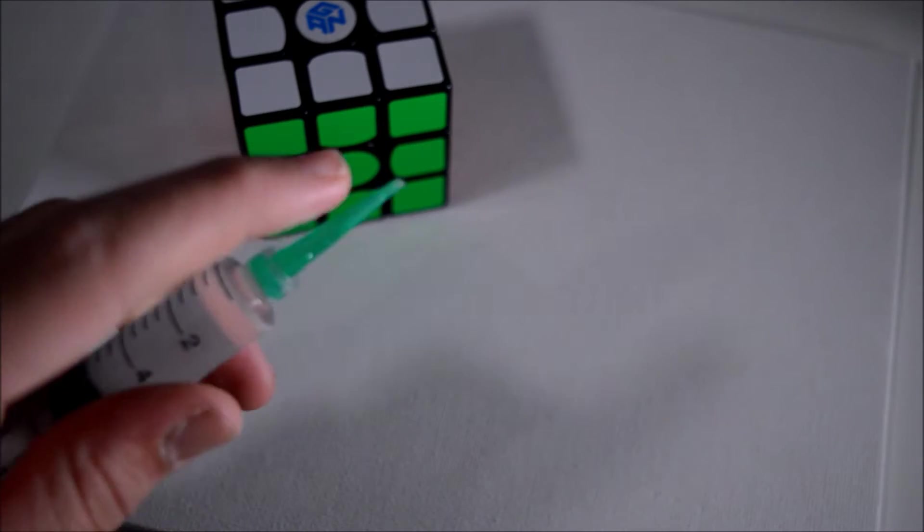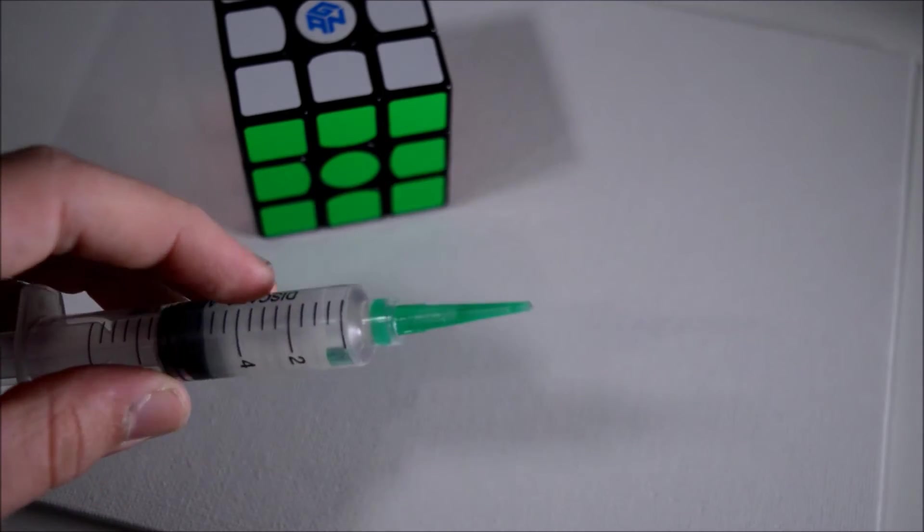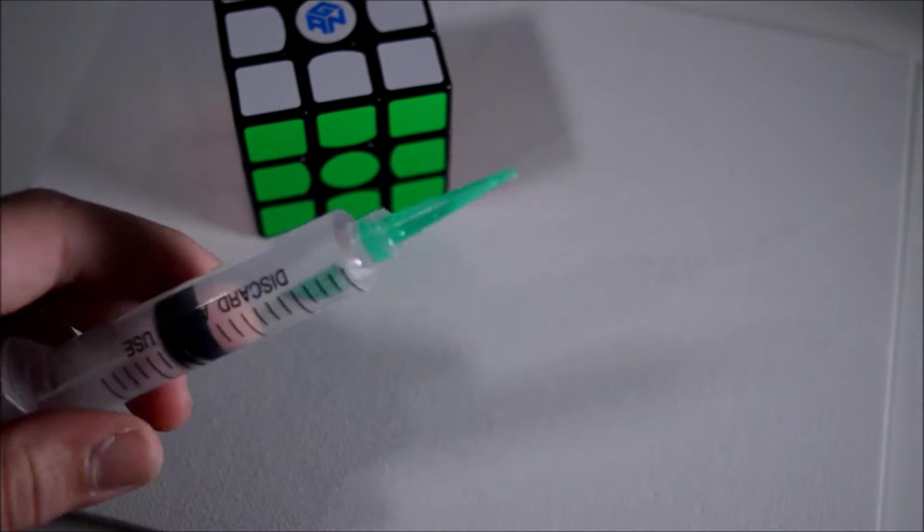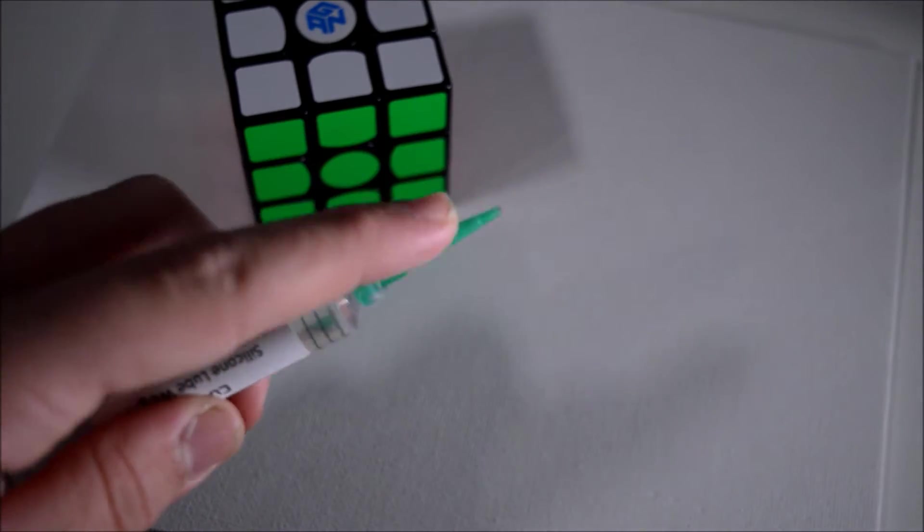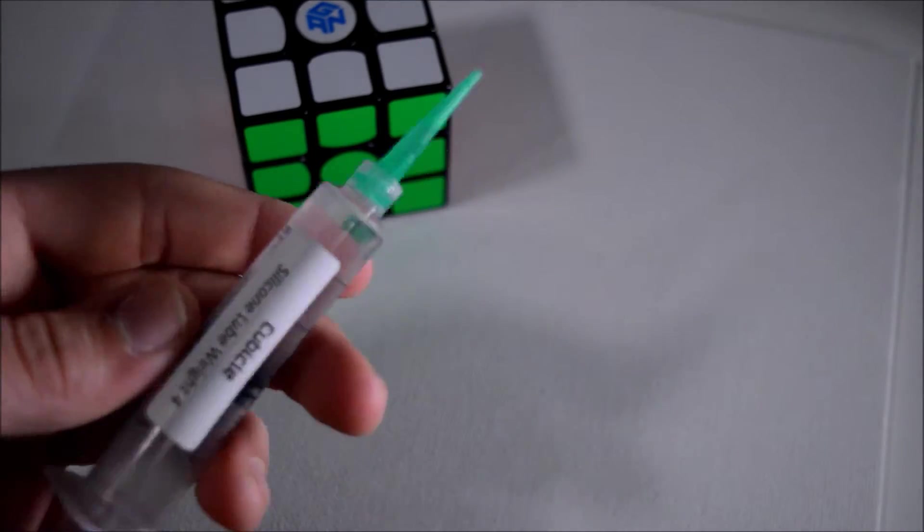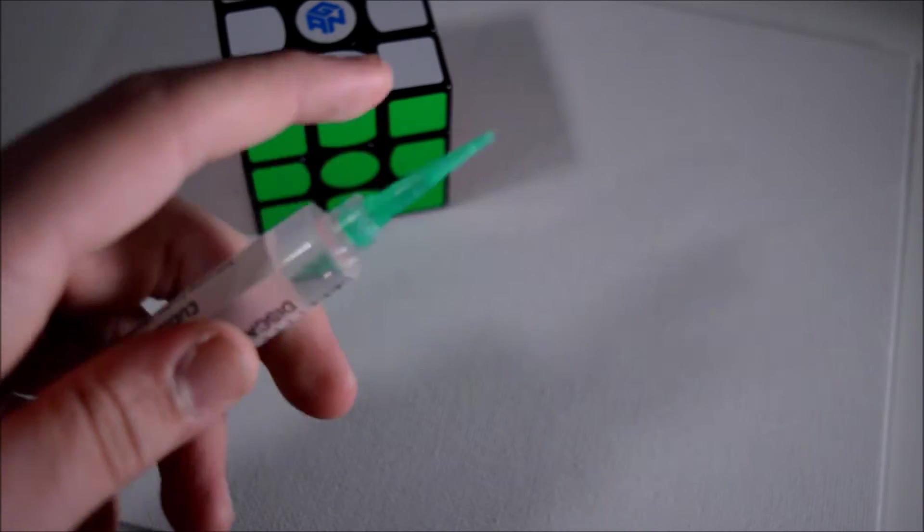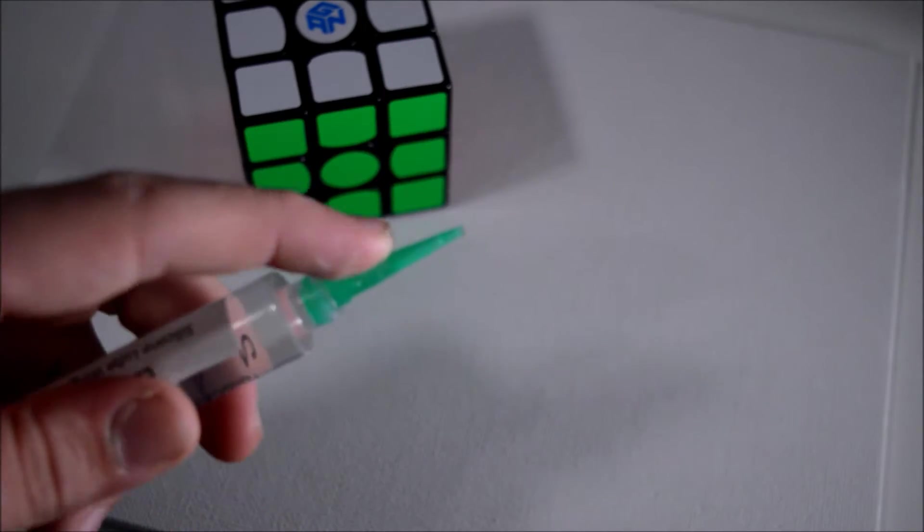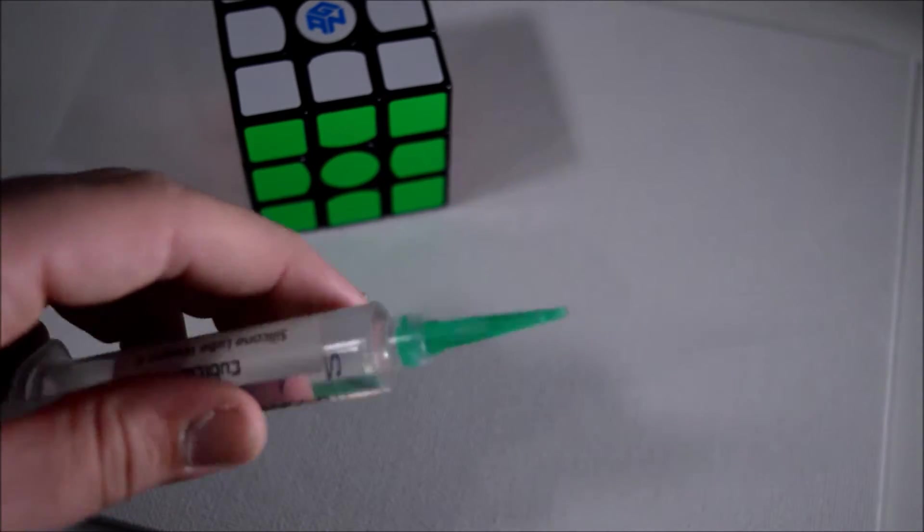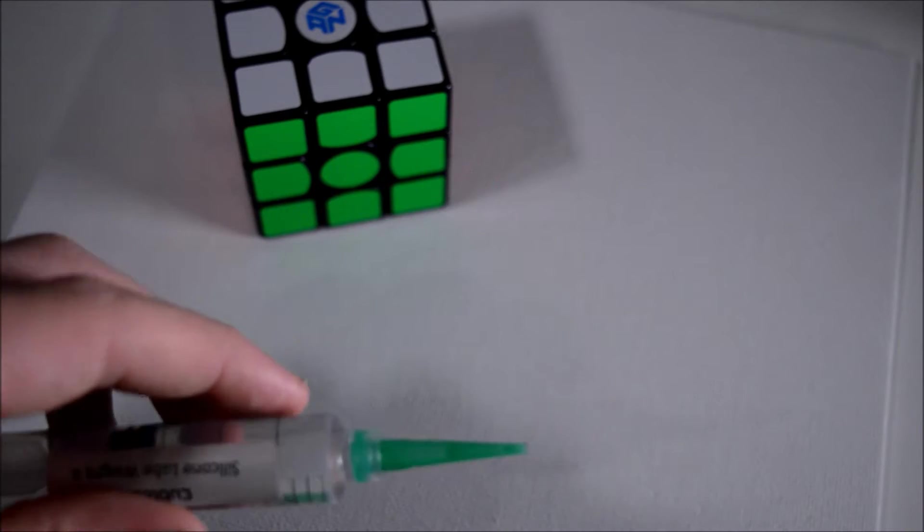Then finally to move around the magnets a little bit more specifically you're going to want this little dispensing tip that you can get on cubicle lubes or speedcube shop lubes. You're not actually going to use the lube, you're just going to use the tip. It's plastic so it won't stick to the magnets and it makes it a lot easier to put them exactly where you want.